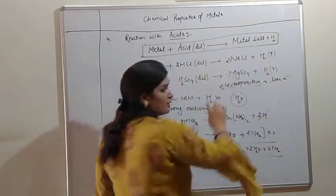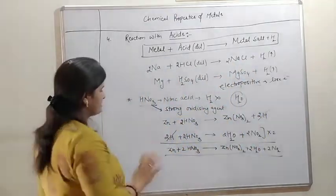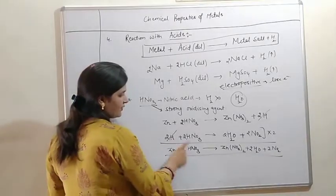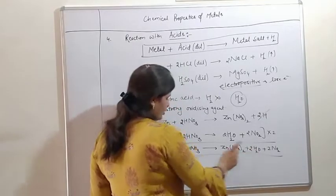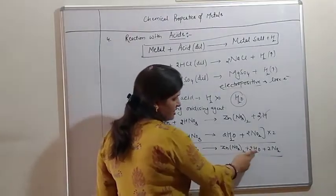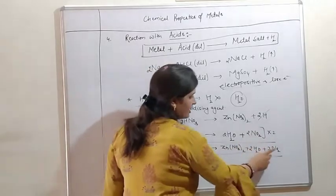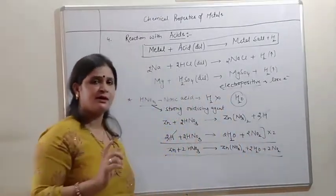It will result in the formation of zinc nitrate plus water plus NO2. So when we react zinc with nitric acid, a salt is formed. Instead of hydrogen, water is formed because nitric acid oxidized the hydrogen to water and itself got reduced.